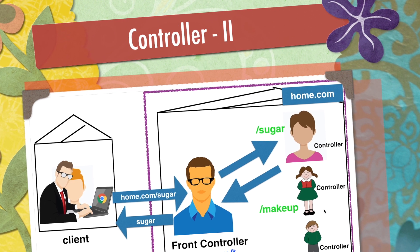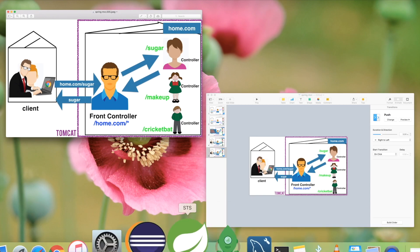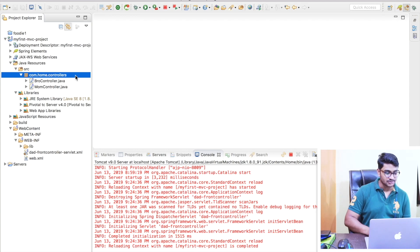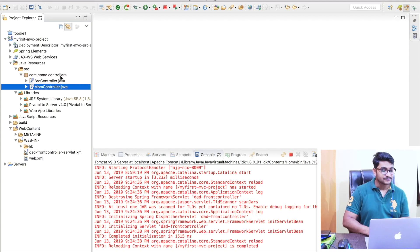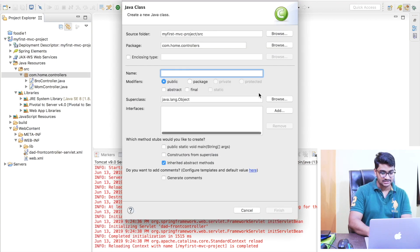In this video we'll complete our example. So far we have made the bro controller and the mom controller. We need to create one more controller called syscontroller and map it with a URL pattern called slash makeup. Now let me go back to my STS — right now I have two controllers: bro controller and mom controller. Now I'm going to create a new controller called syscontroller.